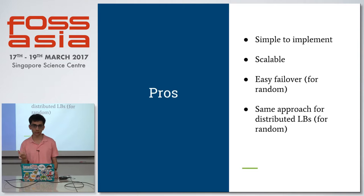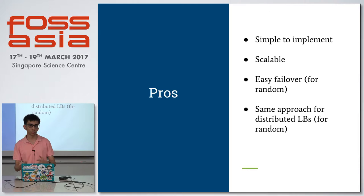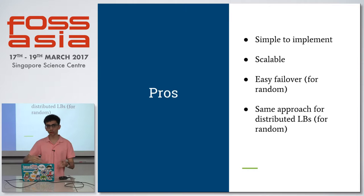For least connections there are actually some really big edge cases, which is why it's not preferred. For distributed load balancers it's the same approach — if one load balancer implements random and another implements random, the combination of them will obviously also be random.